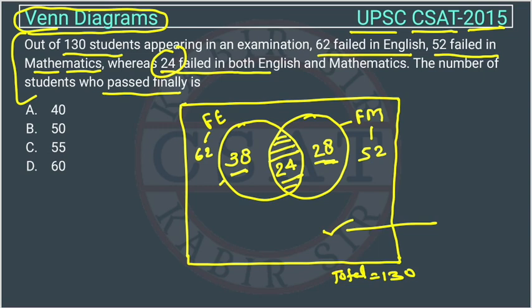Now we will say how many are failed students. This will be 38 plus 24 plus 28. This will be the total number of student who failed. This will be 90.